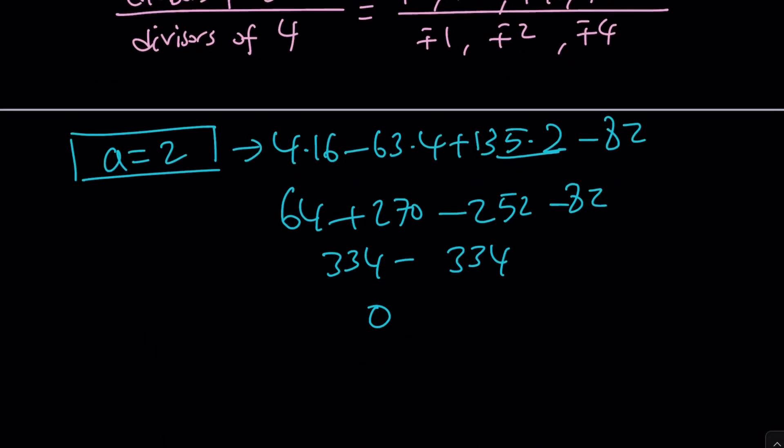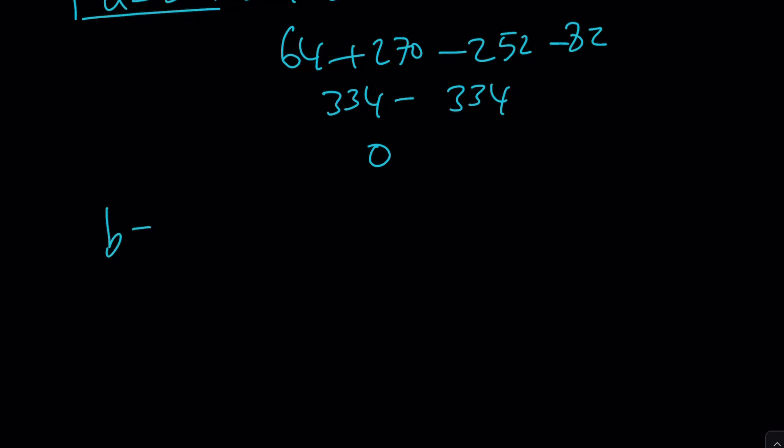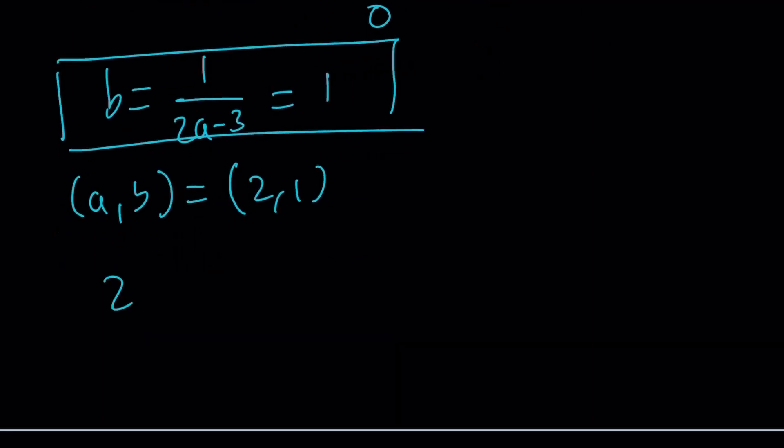B equals 1 over 2 A minus 3. If A is equal to 2, then B is going to be 1. Awesome. So we got A equals 2, B equals 1, which indicates that Z is equal to 2 plus I. Because remember, Z was written as A plus B I. And A equals 2 gave us B equals 1. So this is the solution. This is one of the solutions.